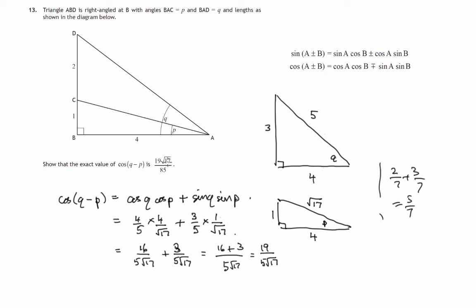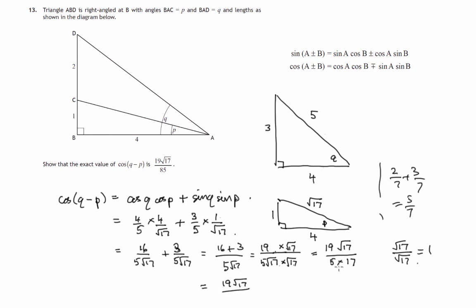Looking at what we're trying to get, the √17 needs to be on the top, not the bottom, so we need to rationalize. We multiply both top and bottom by √17 — effectively multiplying by √17 over √17, which equals one and doesn't alter the fraction's value. This gives us 19√17 over 5 times √17 times √17, which is 17. Finally, 5 times 17 gives us 85, producing exactly 19√17 over 85 as required.